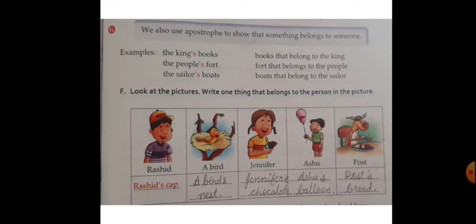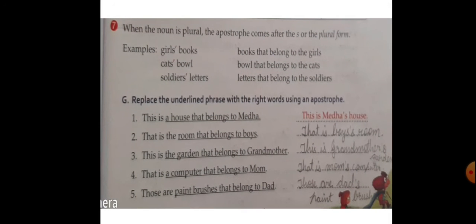कोई भी चीज़ किसी से belong करती है तो उसके लिए apostrophe s लगाएंगे। Look at the picture, write one thing that belongs to the person in the picture. Example: Rashid की cap है — Rashid's cap। Jennifer's chocolate। After the plural form with S — girls, books, cats, soldiers — the apostrophe comes after the S. For example: books that belong to the girls, bow that belongs to the cats, letters that belong to the soldiers।